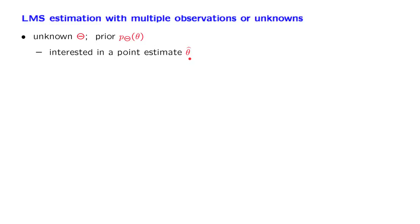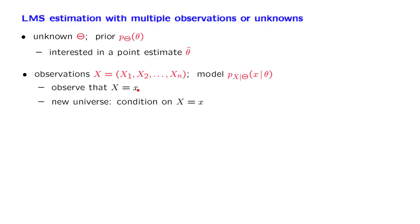What happens if we have multiple observations or parameters? For example, suppose that instead of a single observation, we have a whole vector of observations, and we assume that we have a model for these observations. Once we observe our data, numerical values for each of these observation random variables, we are placed in a conditional universe where these values have been observed.